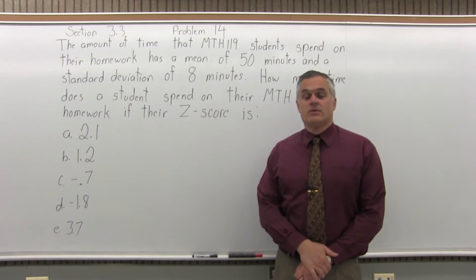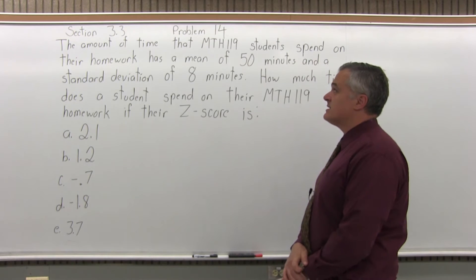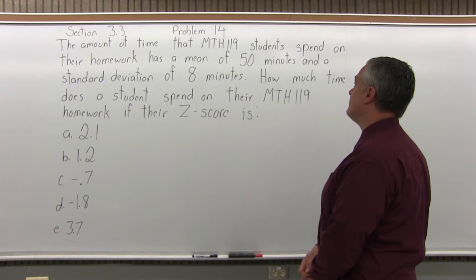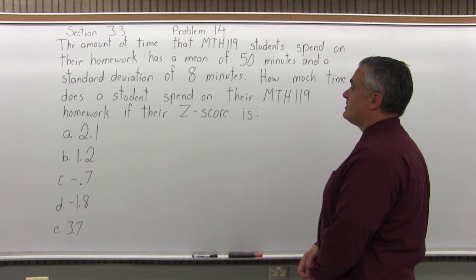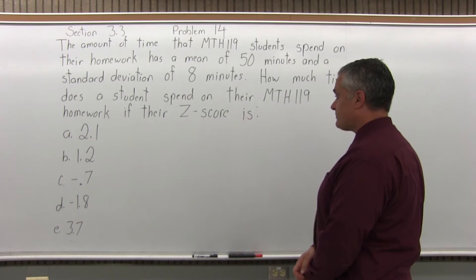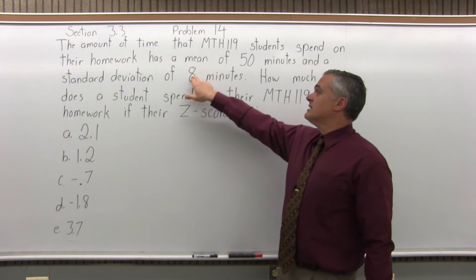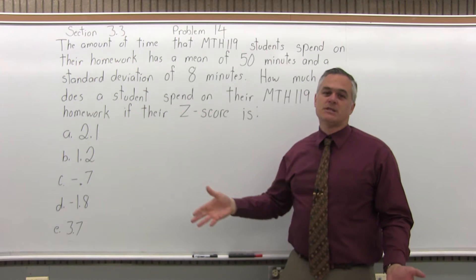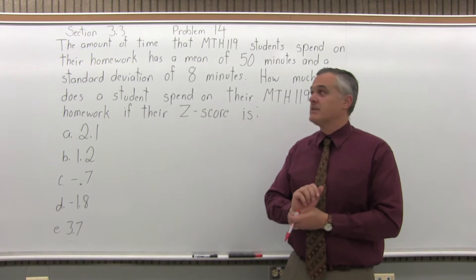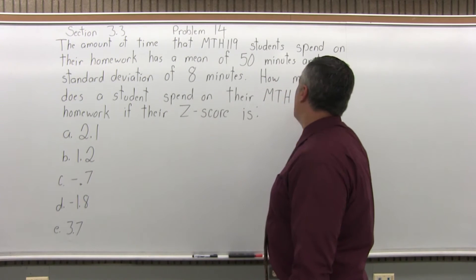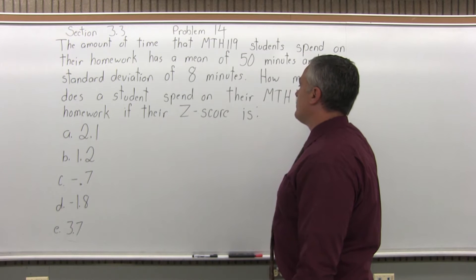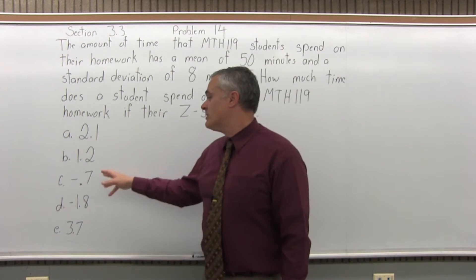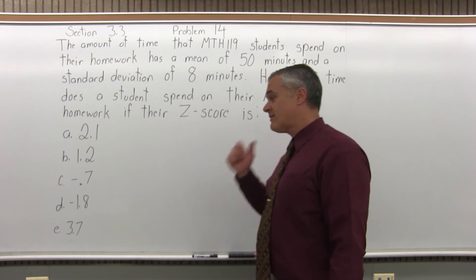This is Section 3.3, Problem number 14. The amount of time that Math 119 students spend on their homework has a mean of 50 minutes and a standard deviation of 8 minutes. The average is 50, and a standard deviation of 8 minutes means on average, from one student to the next, the difference in the amount of time they spend on their homework is 8 minutes. How much time does a student spend on their Math 119 homework if their z-score is 2.1, 1.2, negative 0.7, negative 1.8, or positive 3.7?